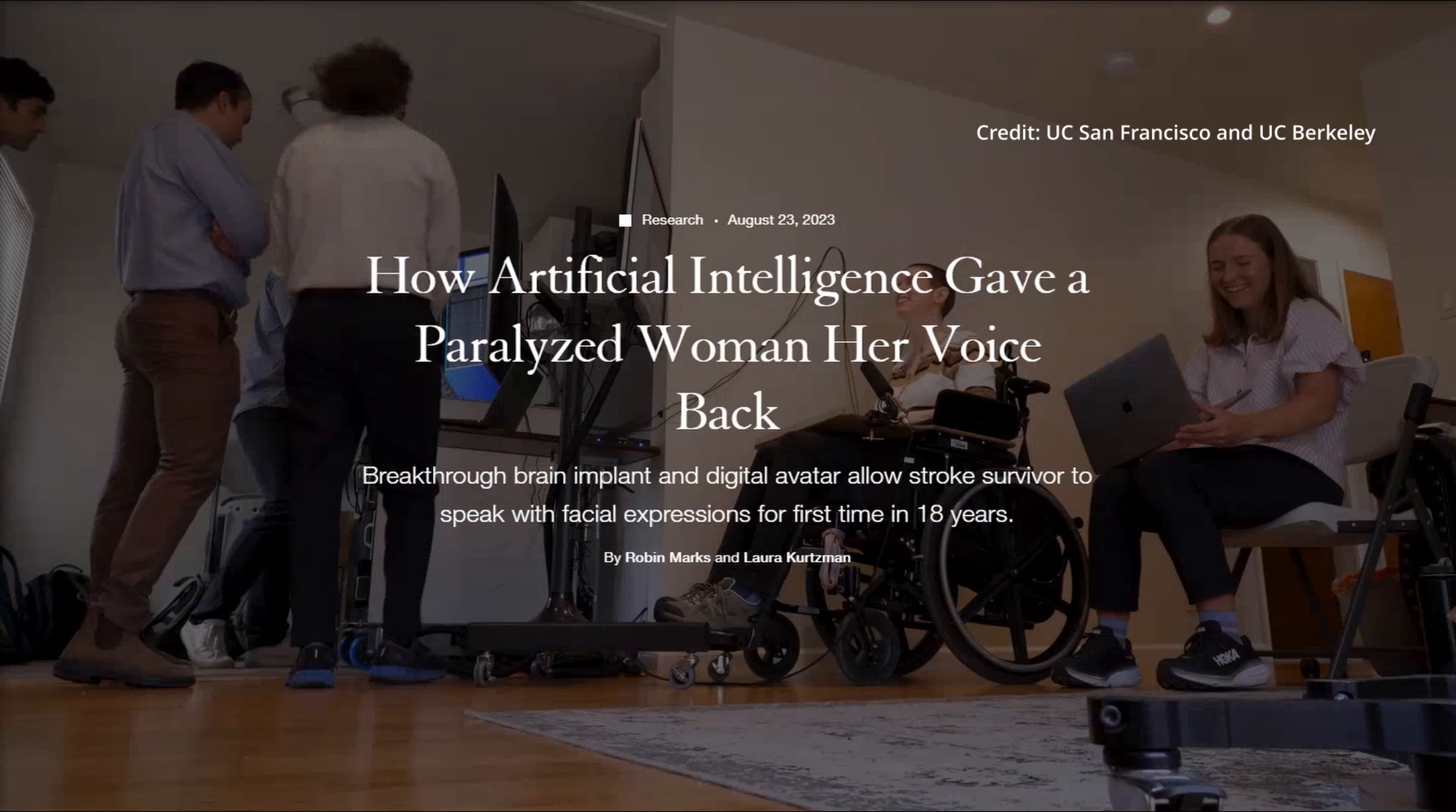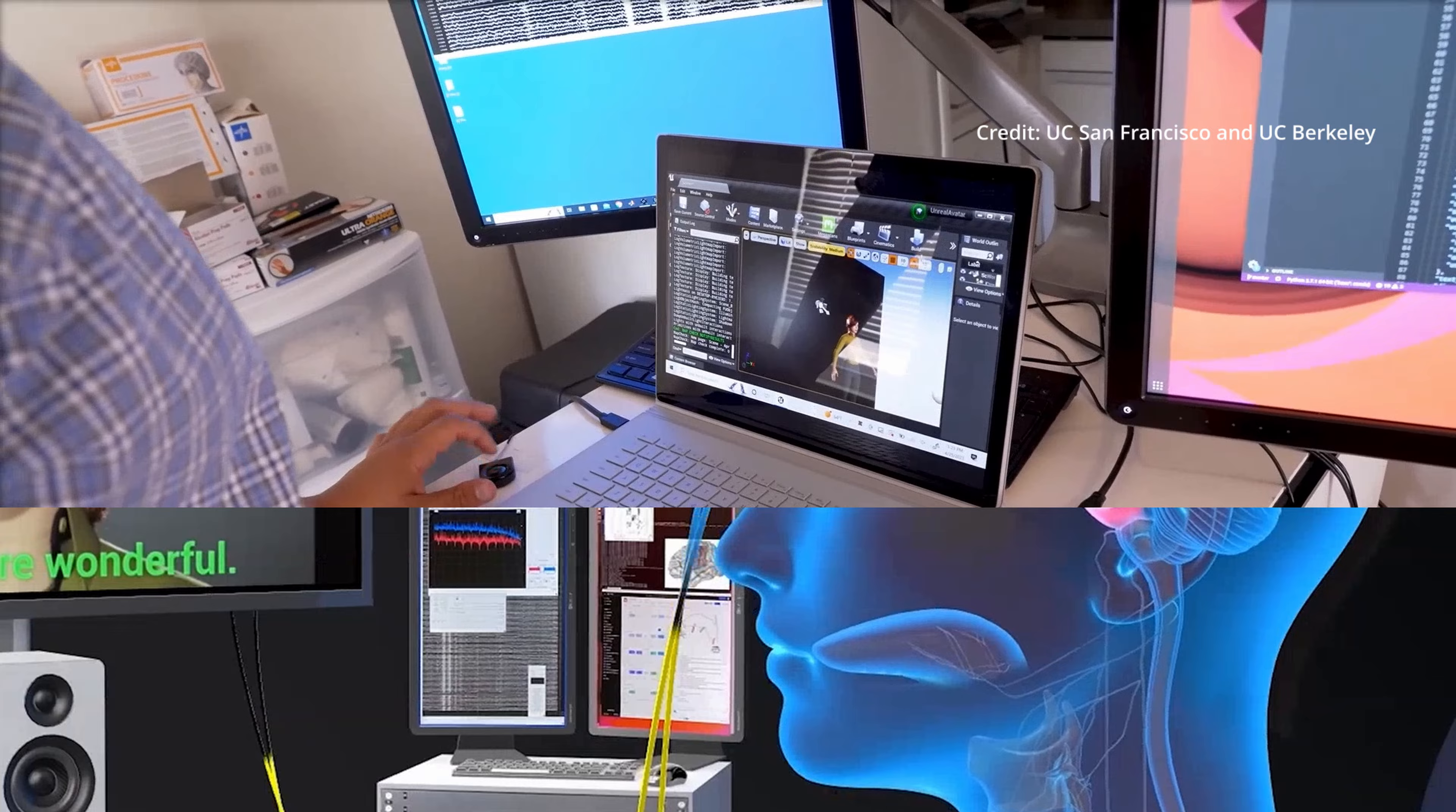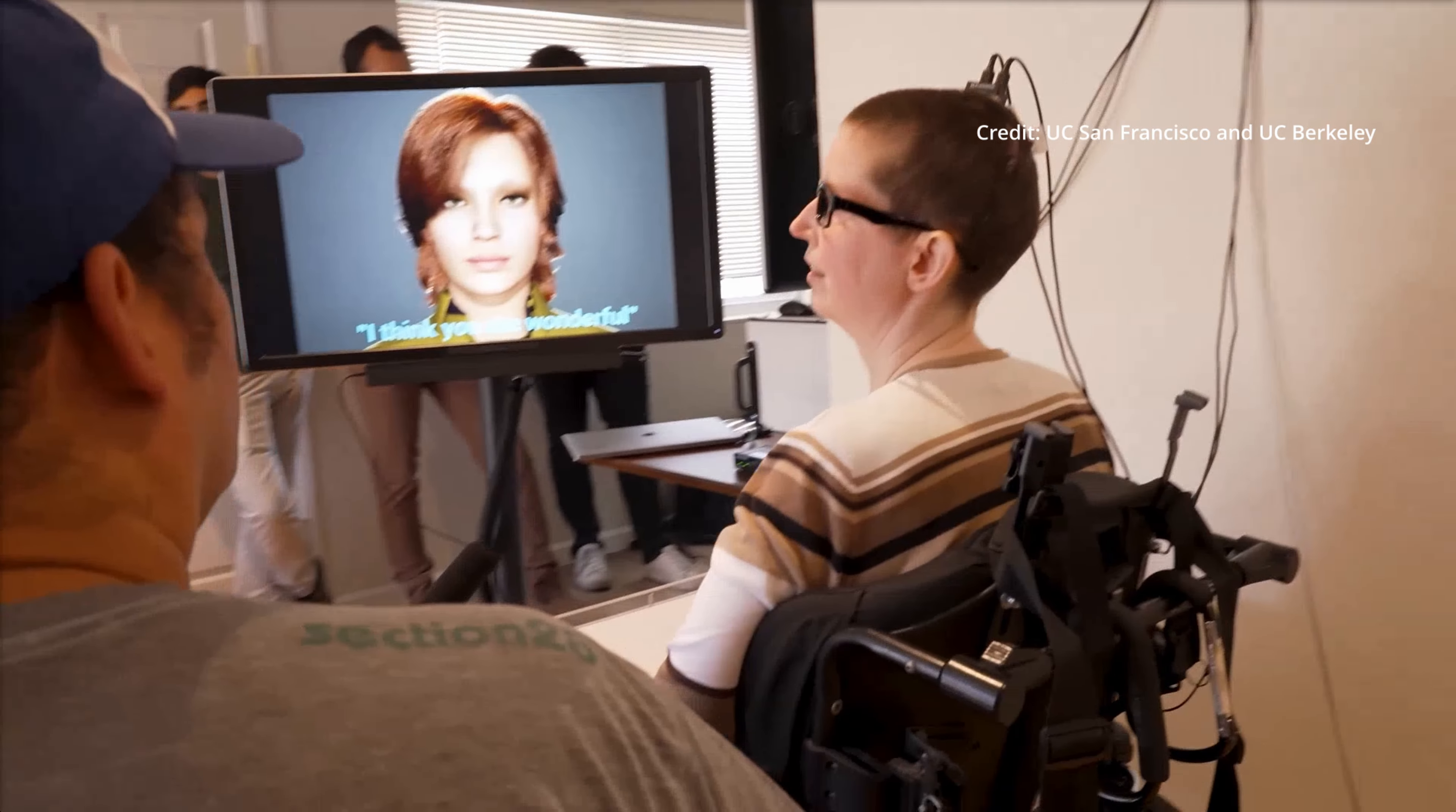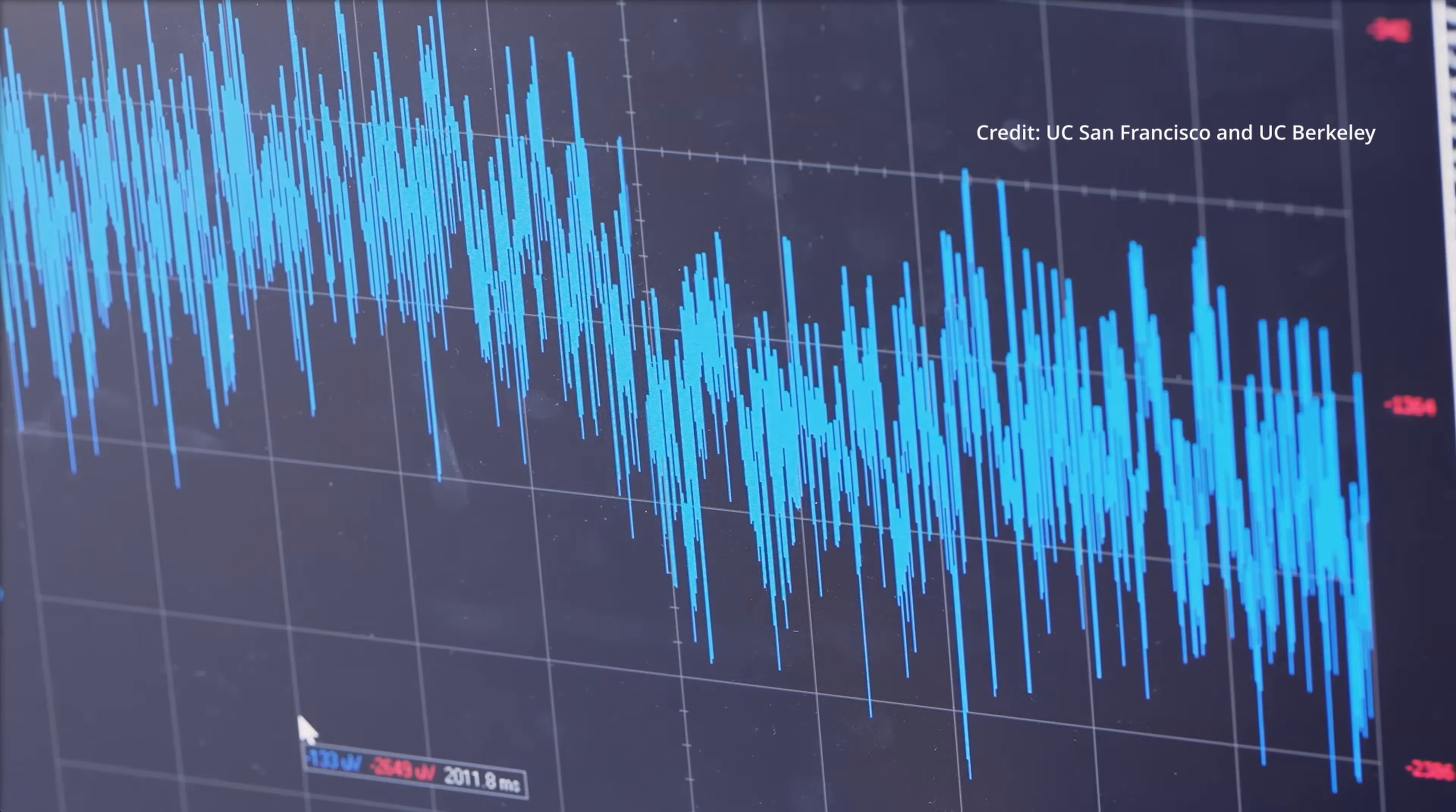For the first time ever, researchers at UC San Francisco and UC Berkeley have successfully created a brain-computer interface and artificial intelligence to allow a woman with severe paralysis to speak through a digital avatar. What sets this achievement apart is that it is the first time in history that not only speech but also facial expressions have been synthesized from brain signals.